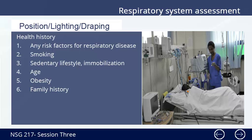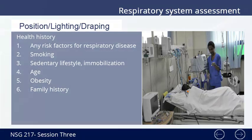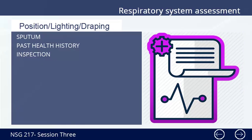Additional risk factors include sedentary lifestyle or immobilization, age, and environmental exposures such as dust, chemicals, asbestos, and air pollution. Also consider obesity and family history. Regarding sputum, consider the amount, the color, the presence of blood (that is, hemoptysis), the odor, the consistency, and pattern of production.